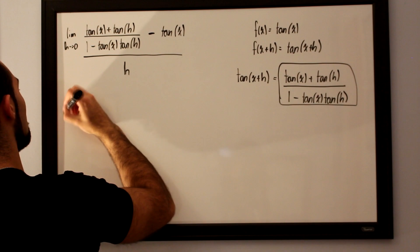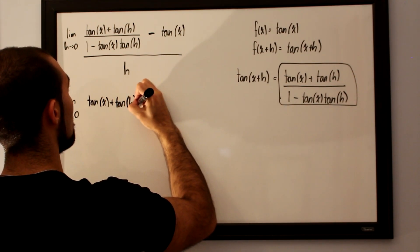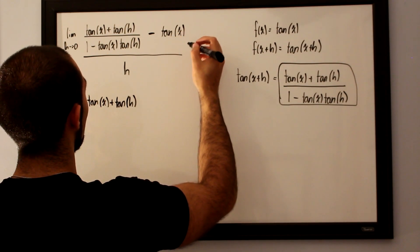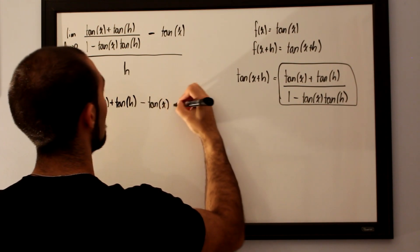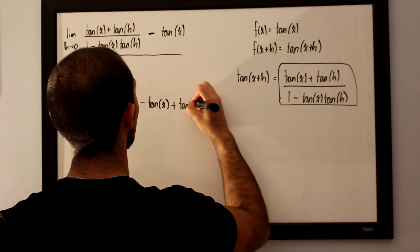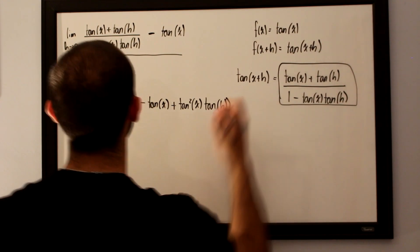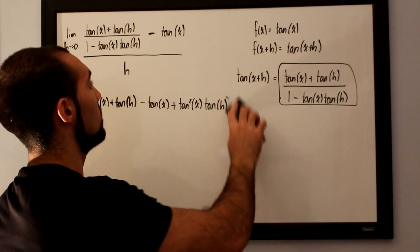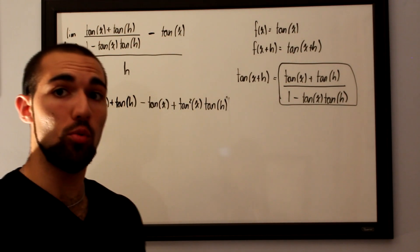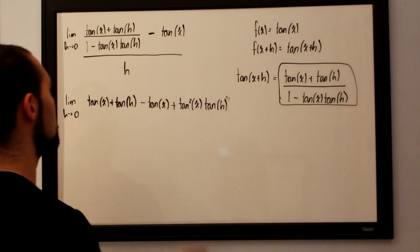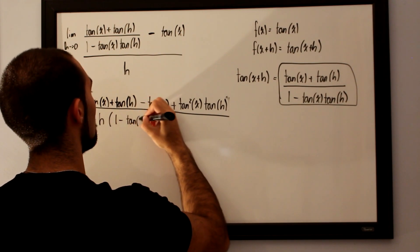We take the limit as h approaches 0 for tan(x) plus tan(h), then distribute: negative tan(x) multiplied by 1 gives minus tan(x), and we also get plus tan²(x)·tan(h). Because these are under a common fraction, we can drag the denominator of the numerator into the overall denominator, placing it alongside h. So the denominator becomes h multiplied by 1 minus tan(x)·tan(h).